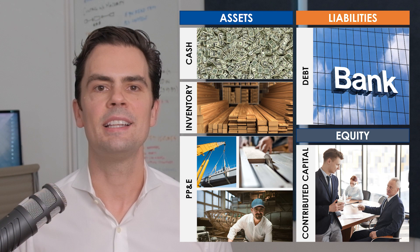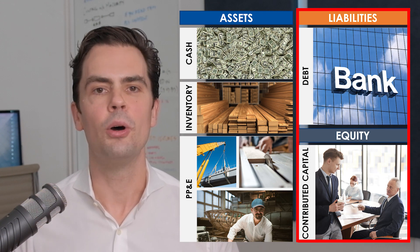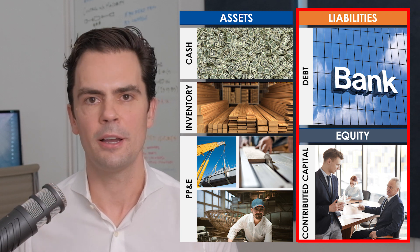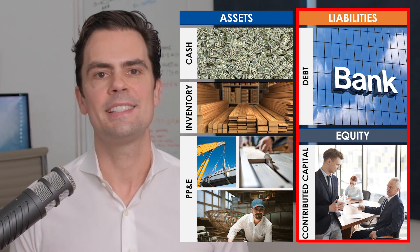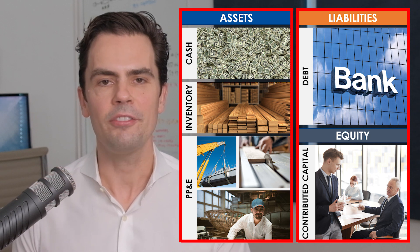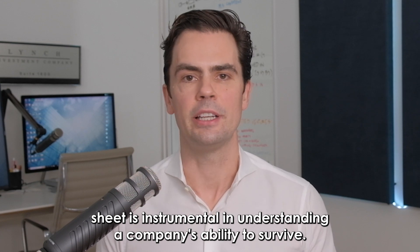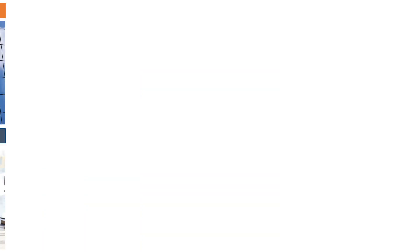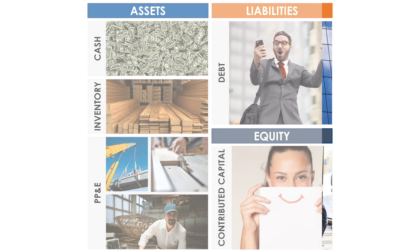Here's something absolutely critical to think about. This side of the balance sheet represents the means of owning the assets that generate revenue for the company. But once you start operating, these assets need to continue to generate enough profit to maintain these obligations. In this way, a balance sheet is instrumental in understanding a company's ability to survive. You need to know precisely how many boats the company needs to sell to maintain these obligations. Hopefully, profits exceed these demands and both your shareholders and creditors remain happy.